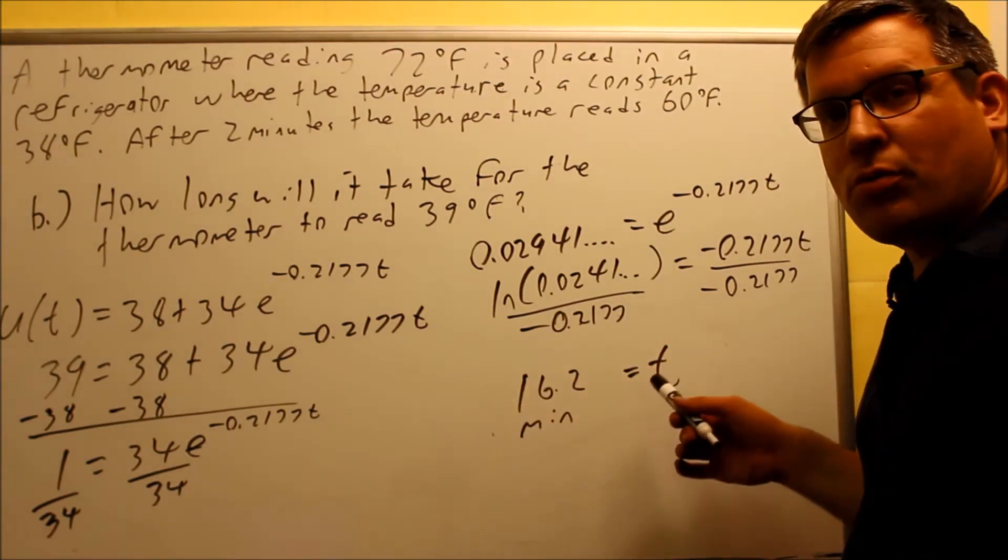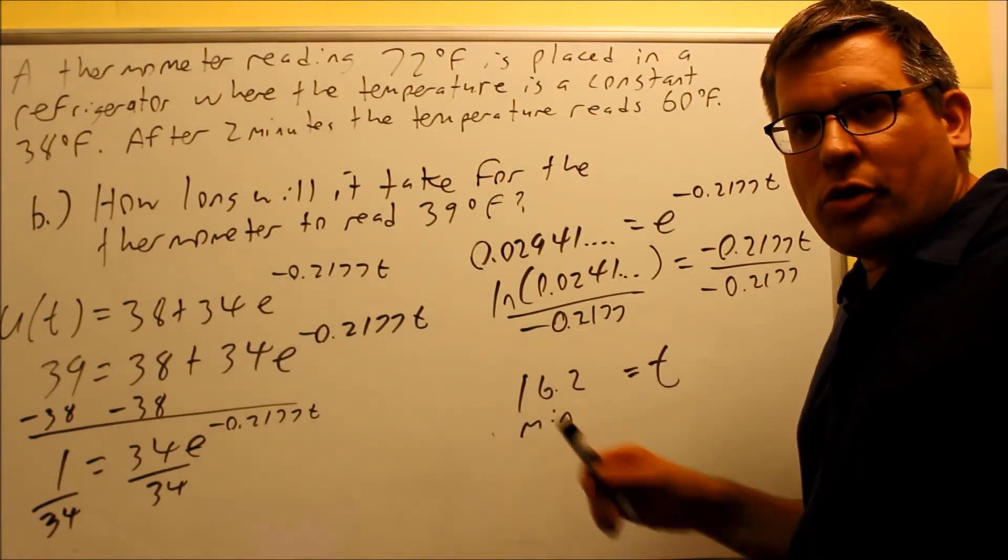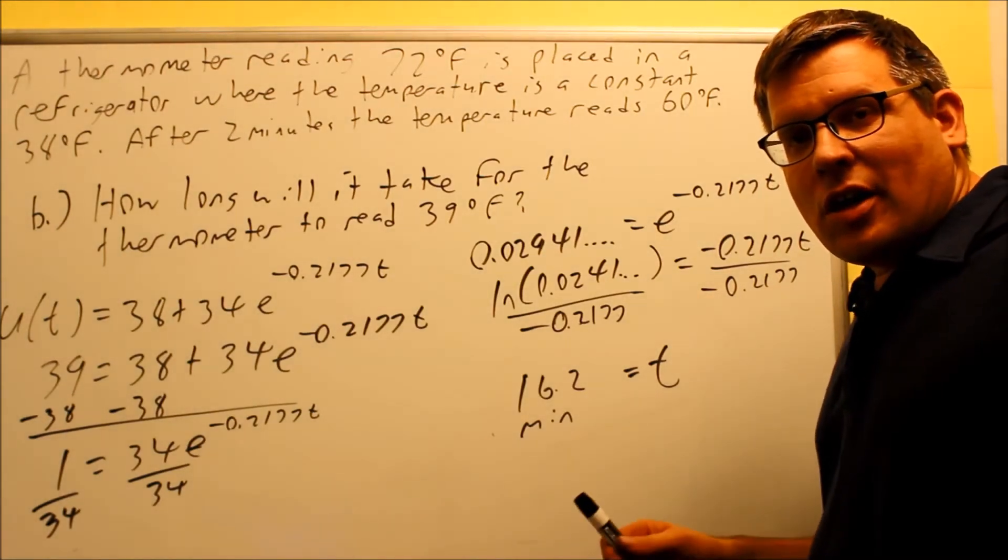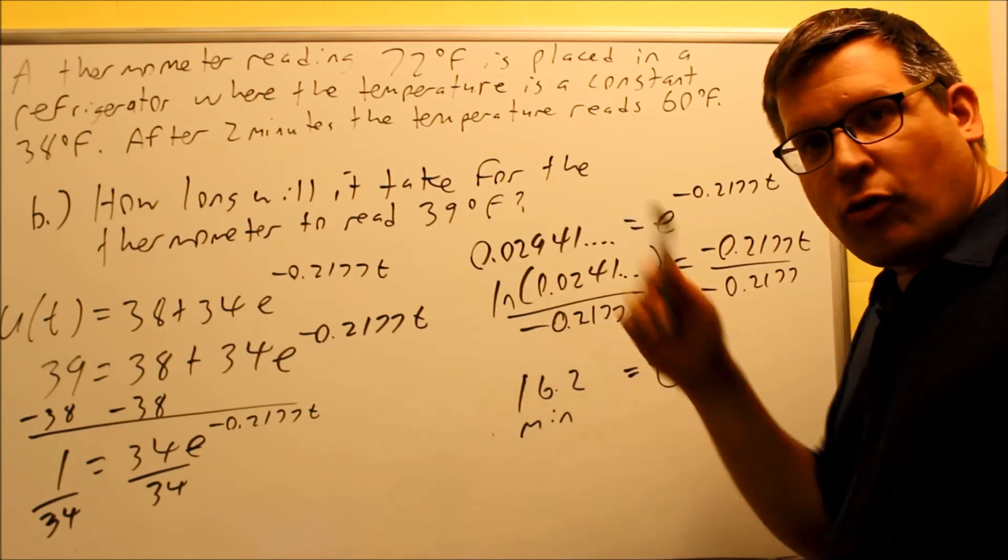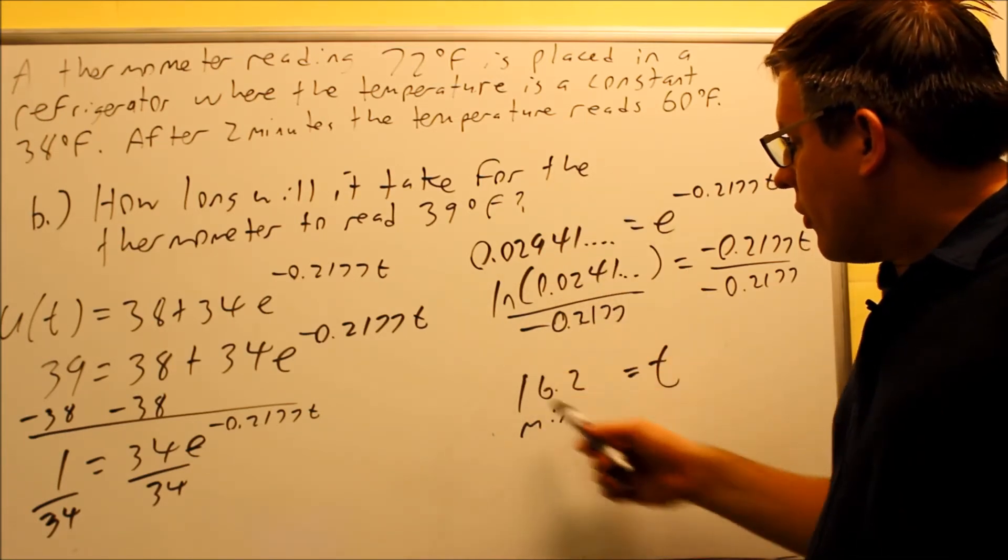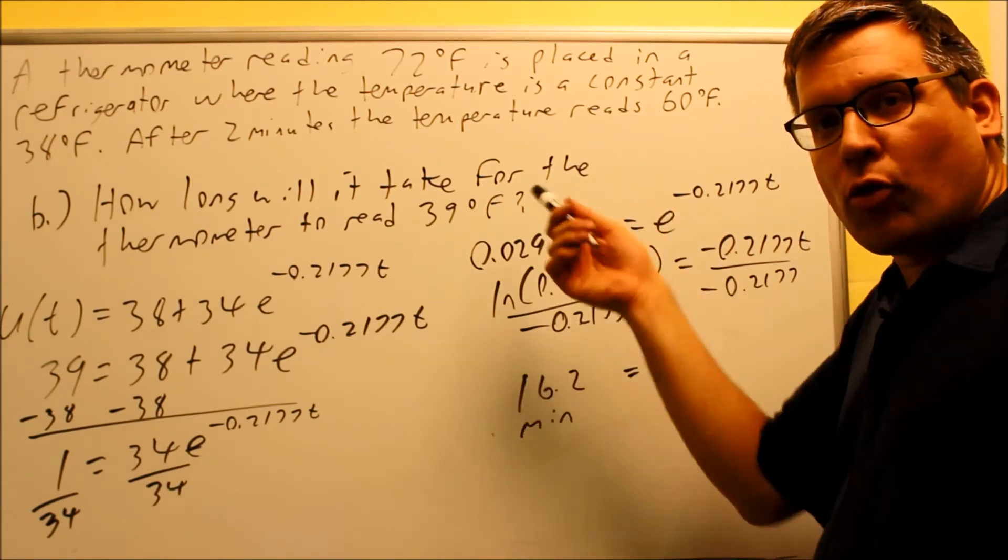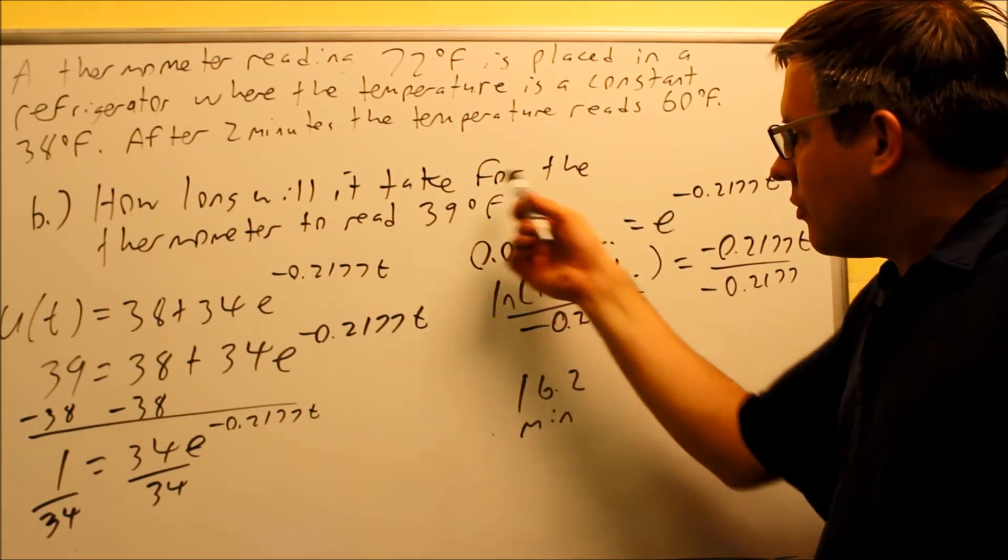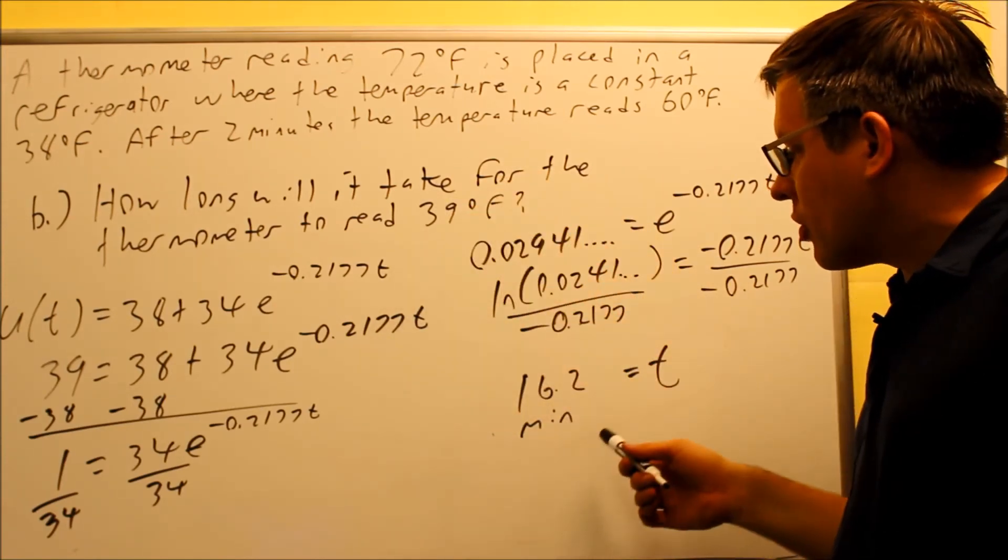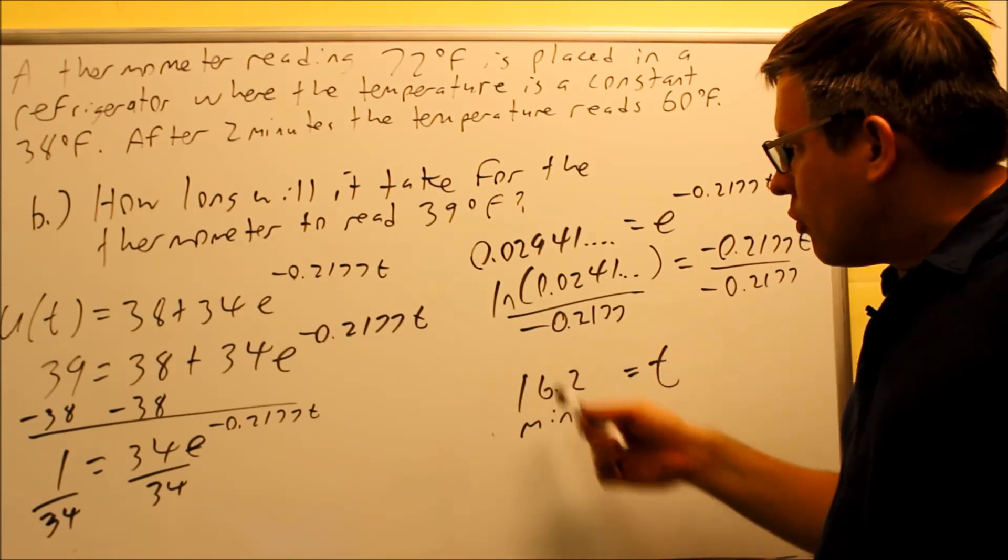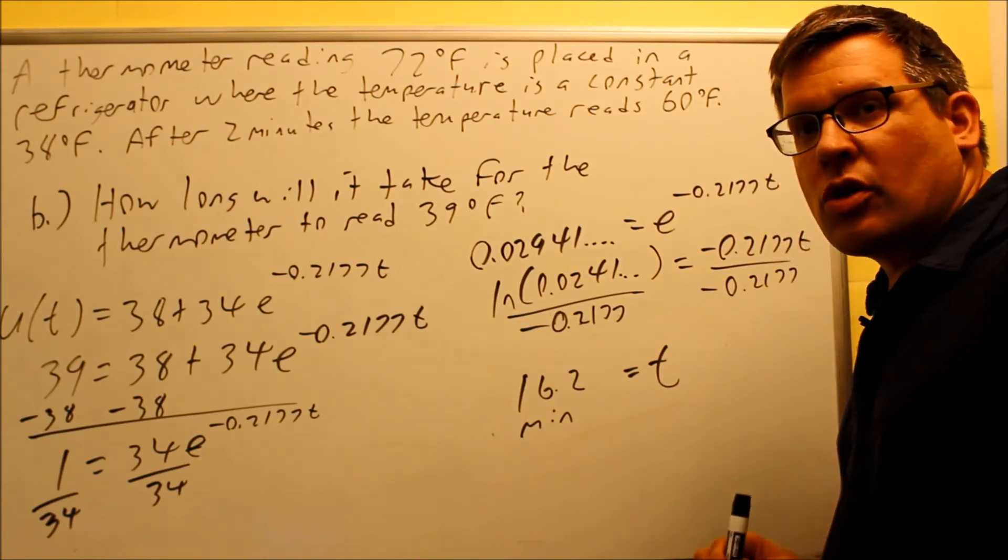We got 16.2 minutes. Let's think about if this makes sense. The previous example said that if it was cooling for only 7 minutes, it cooled to 45 degrees. So it makes sense that if I have more time, the temperature should be lower. Last time I had 45 degrees Fahrenheit for 7 minutes. Now it cools down further because I have more time. The temperature now is 39 degrees after 16.2 minutes working with Newton's Law of Cooling formula.